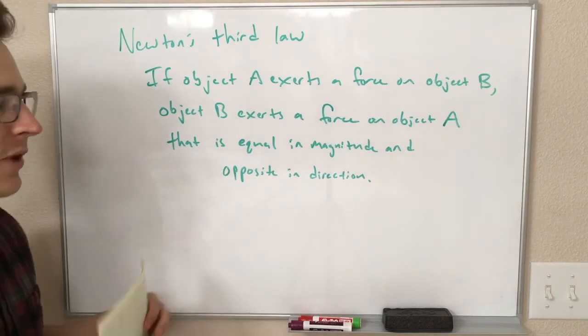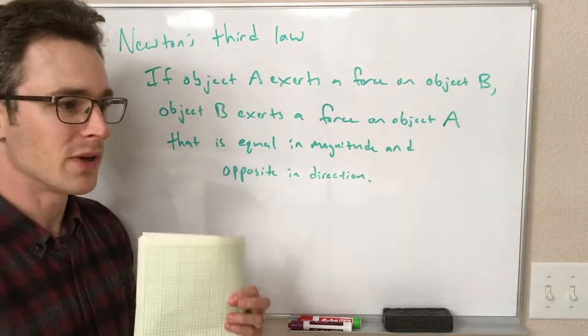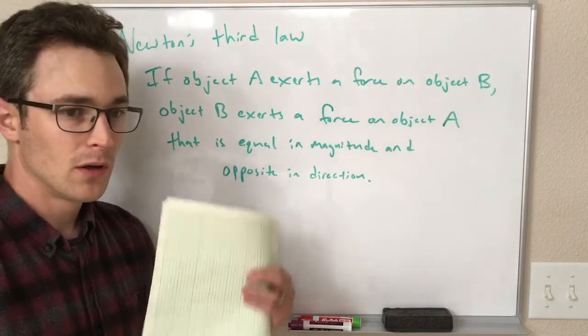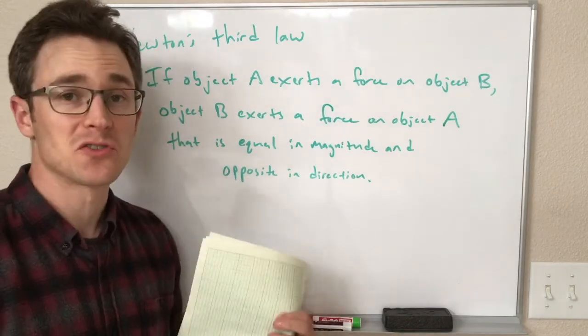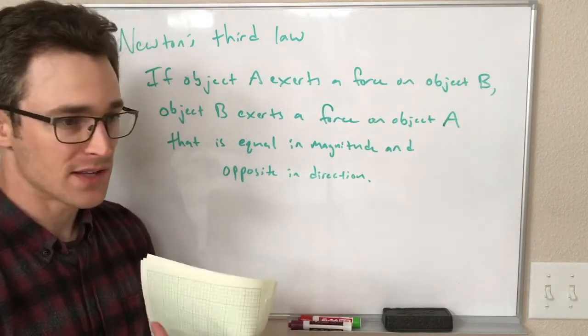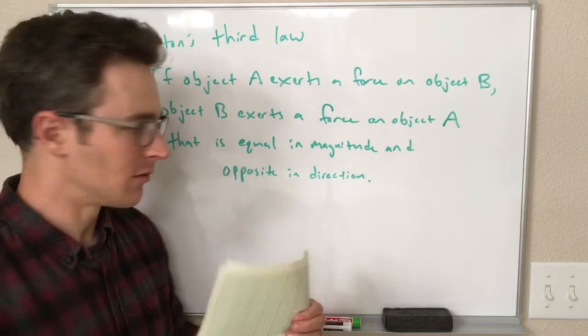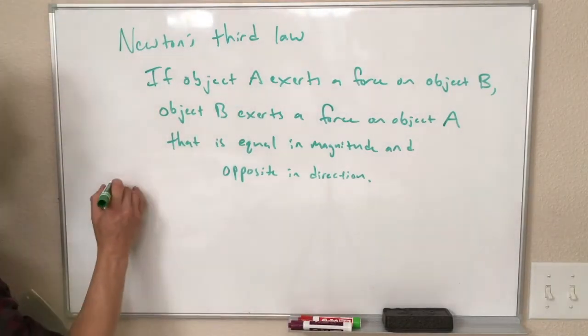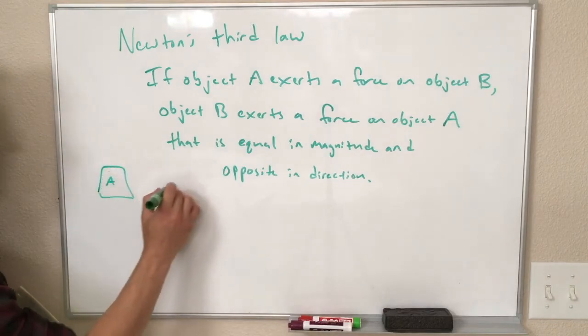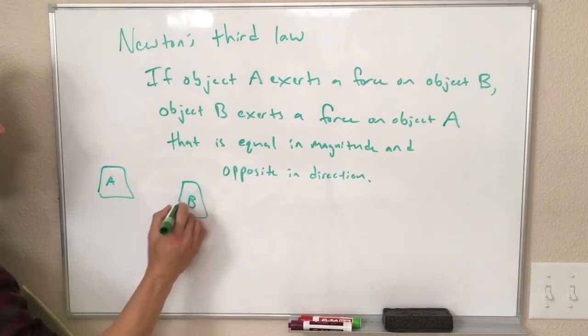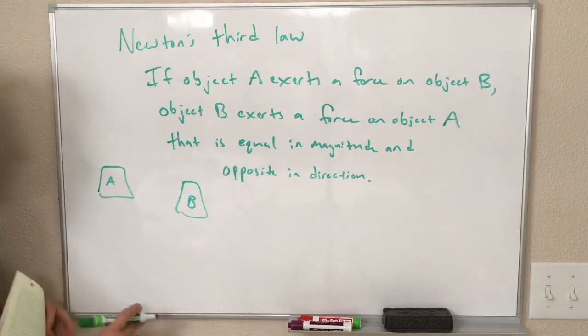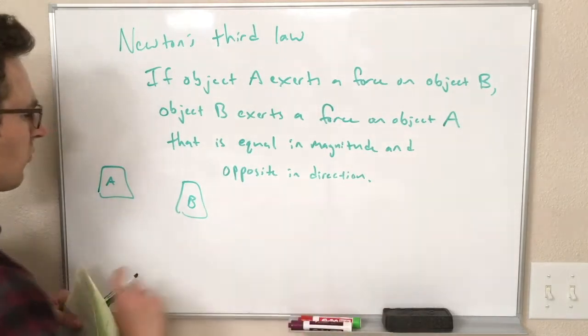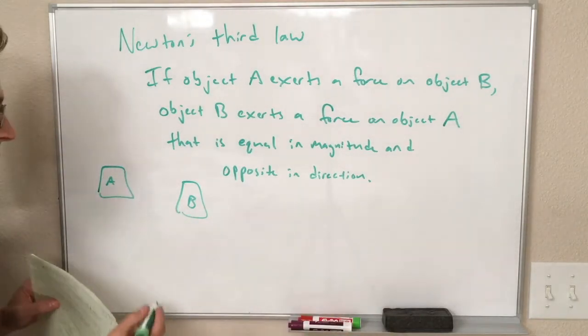If object A exerts a force on object B, object B exerts a force on object A that is equal in magnitude and opposite in direction. In other words, we have two objects. If one of them exerts a force on the other one, that second one has to be exerting a force on the first one that is exactly as big and right back at it.